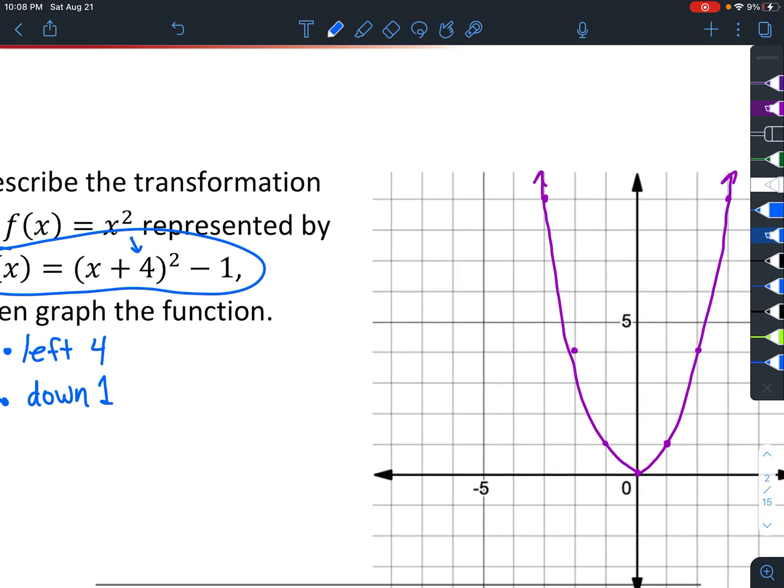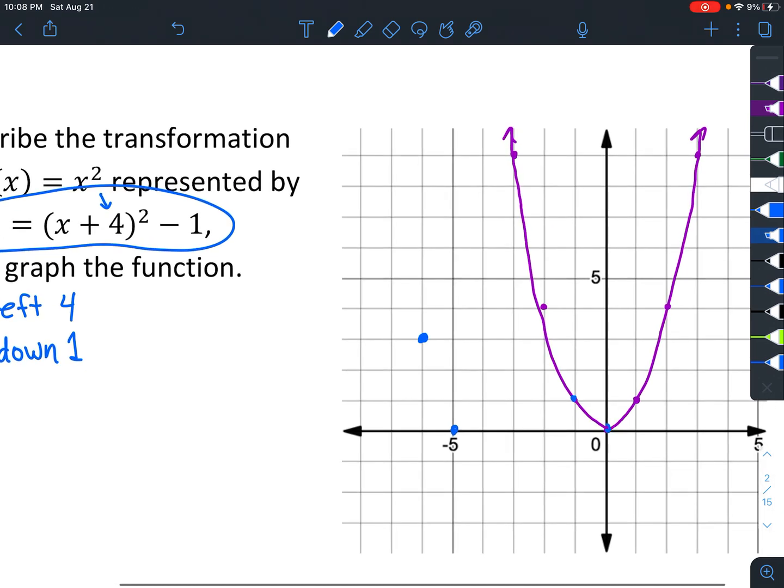What we can do is actually look at each point and go left 4: 1, 2, 3, 4, and then down 1. Let's look at this point and go to the left 4: 1, 2, 3, 4, and then down 1. Look at this point: 1, 2, 3, 4, and down 1. I forgot this point way up here: 1, 2, 3, 4, down 1.